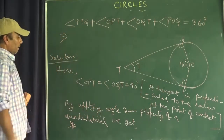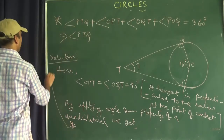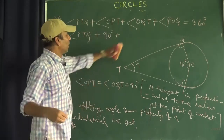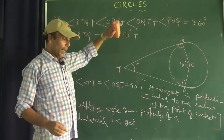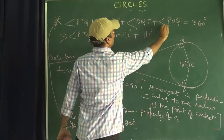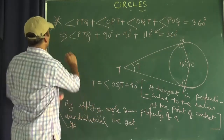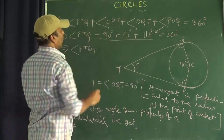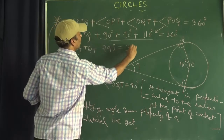Substituting the known values: angle PTQ plus 90 degrees plus 90 degrees plus 110 degrees equals 360 degrees. So angle PTQ plus 290 degrees equals 360 degrees.